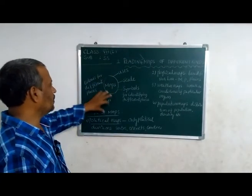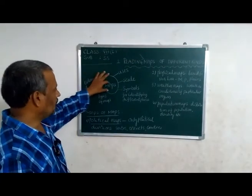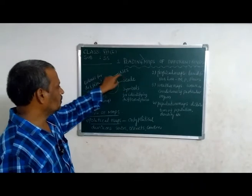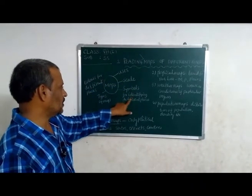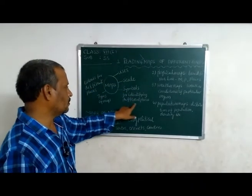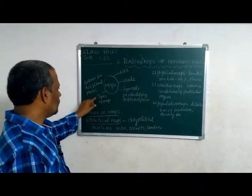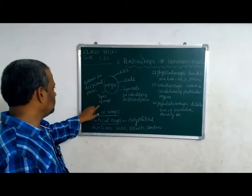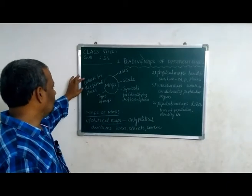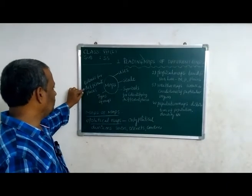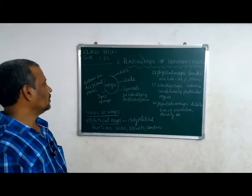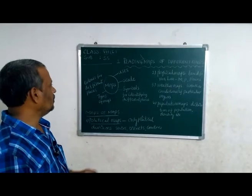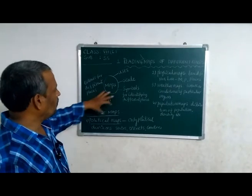Mind mapping of maps: it uses symbols for identifying different places, types of maps, and colors for different places.